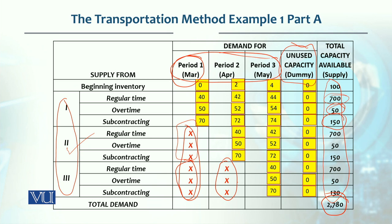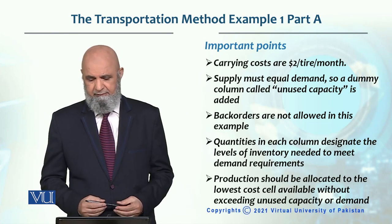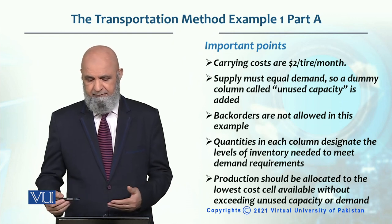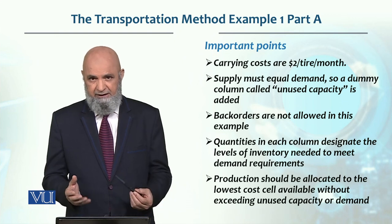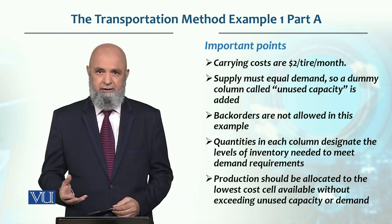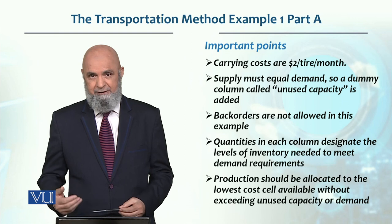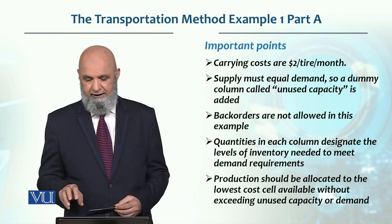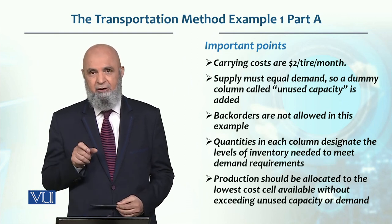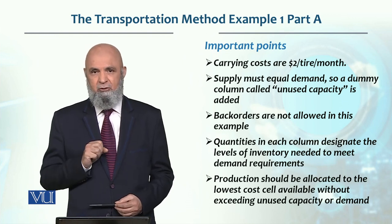जैसे मैंने कहा, इस method के अंदर demand और supply बराबर होनी चाहिए। तो जब इनको assign करेंगे तो जो बचेगा वो unused capacity में होना चाहिए। जब इन चारों को sum करें तो 27,180 units का total आए जो capacity के बराबर होना चाहिए। Carrying cost $2 है — dummy जो unused capacity है, वो add होकर total capacity के बराबर हो जाएगी।